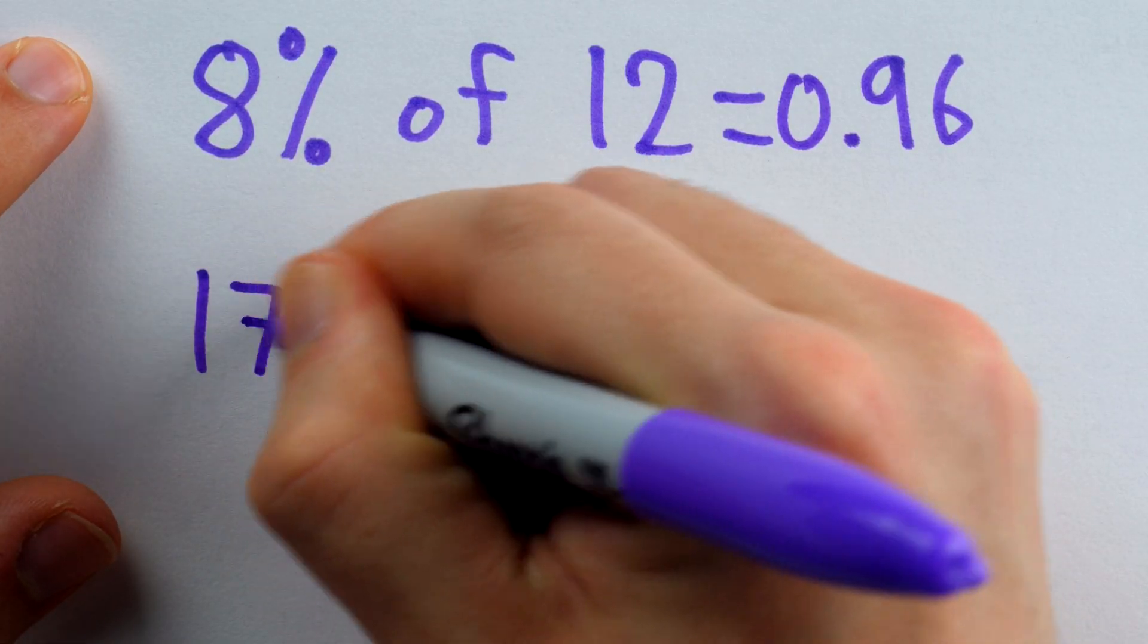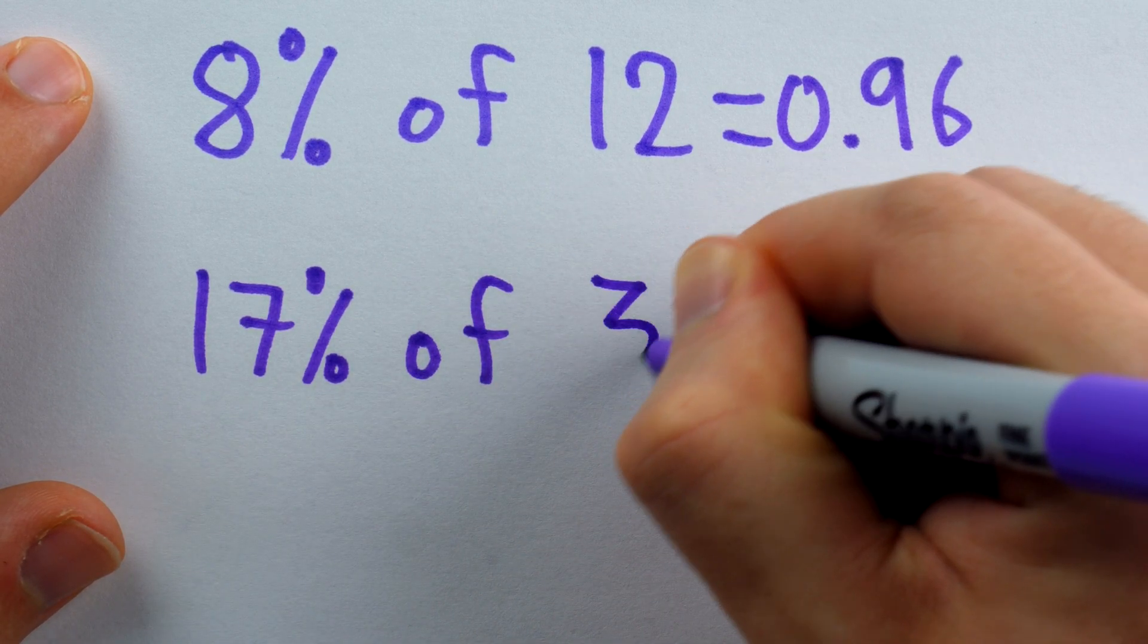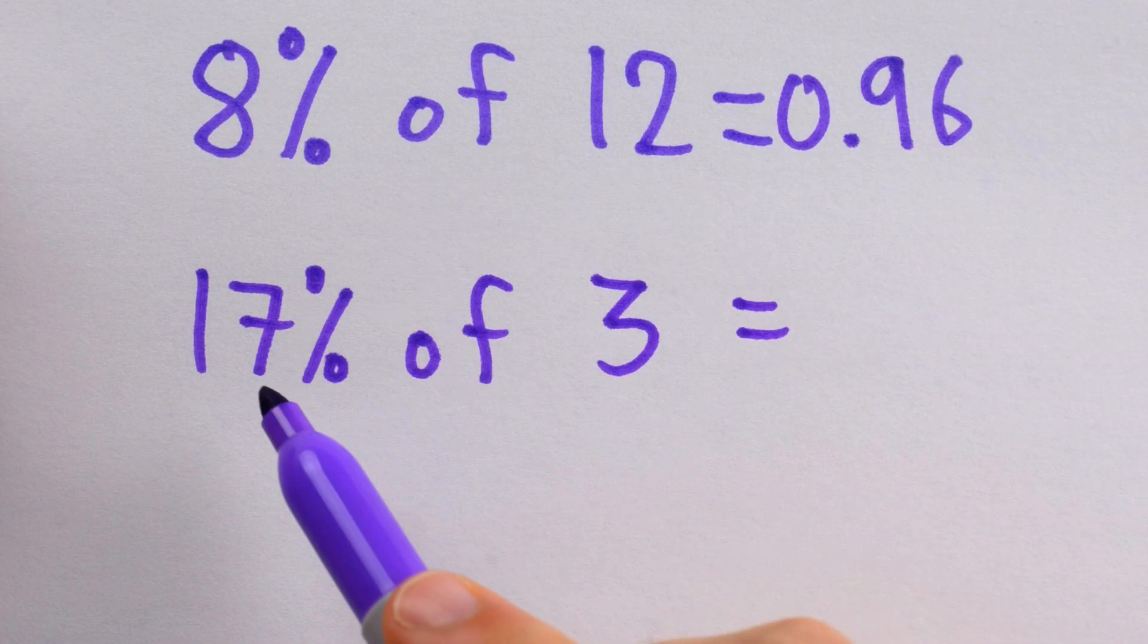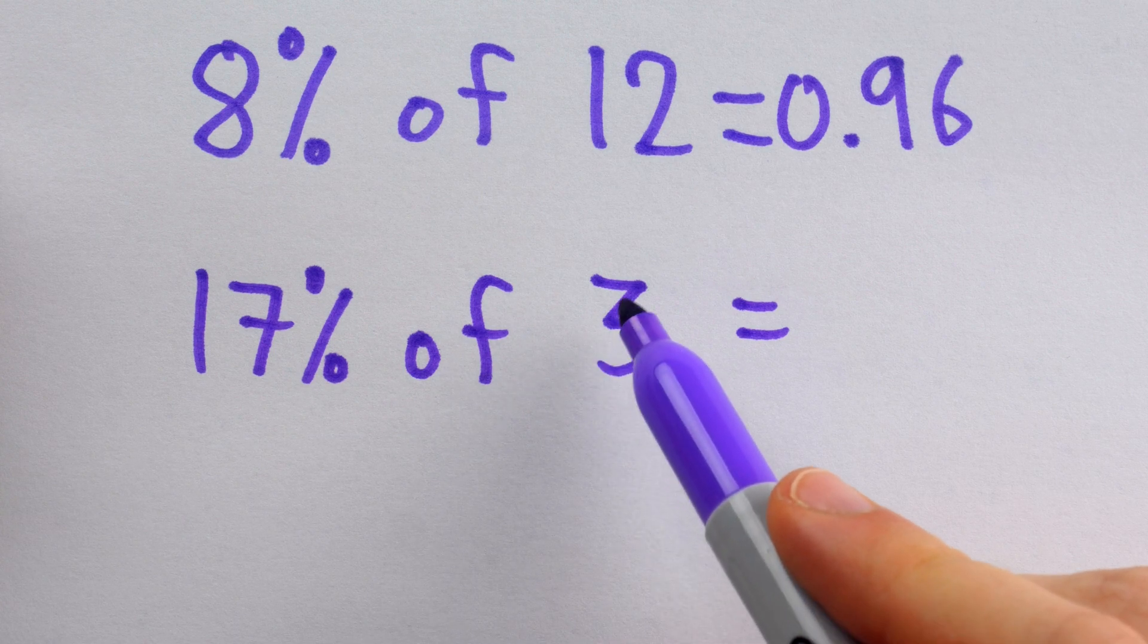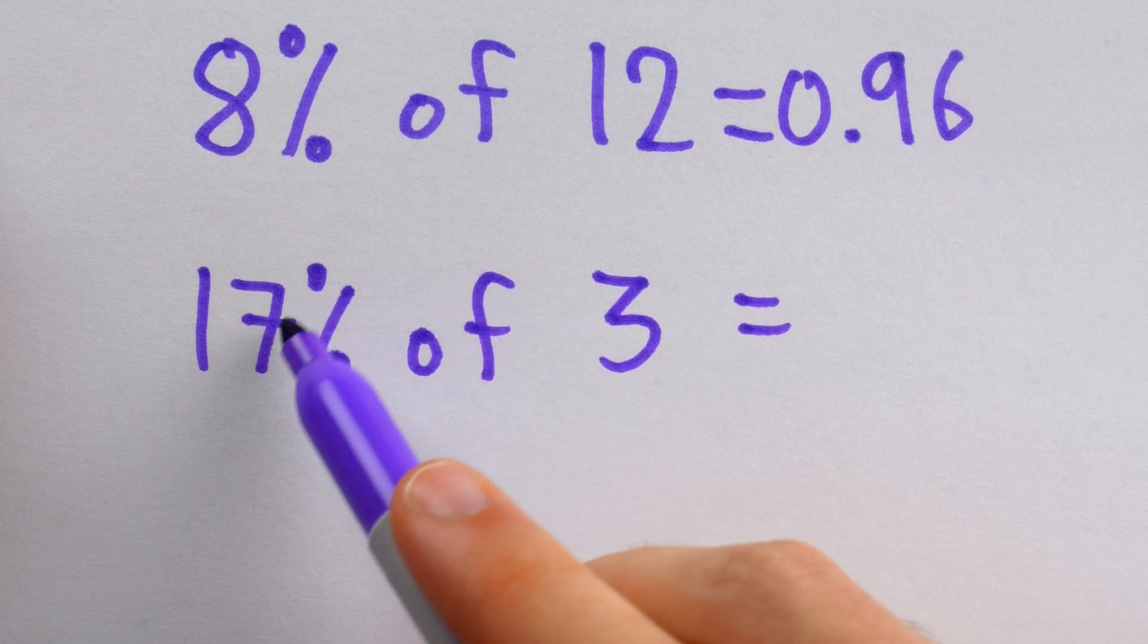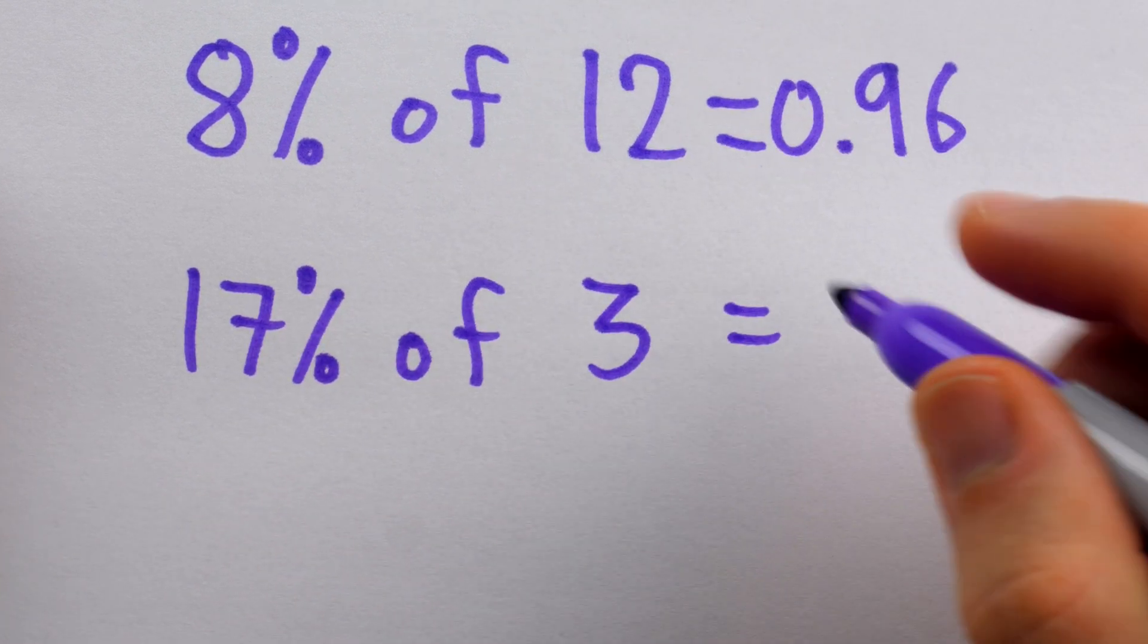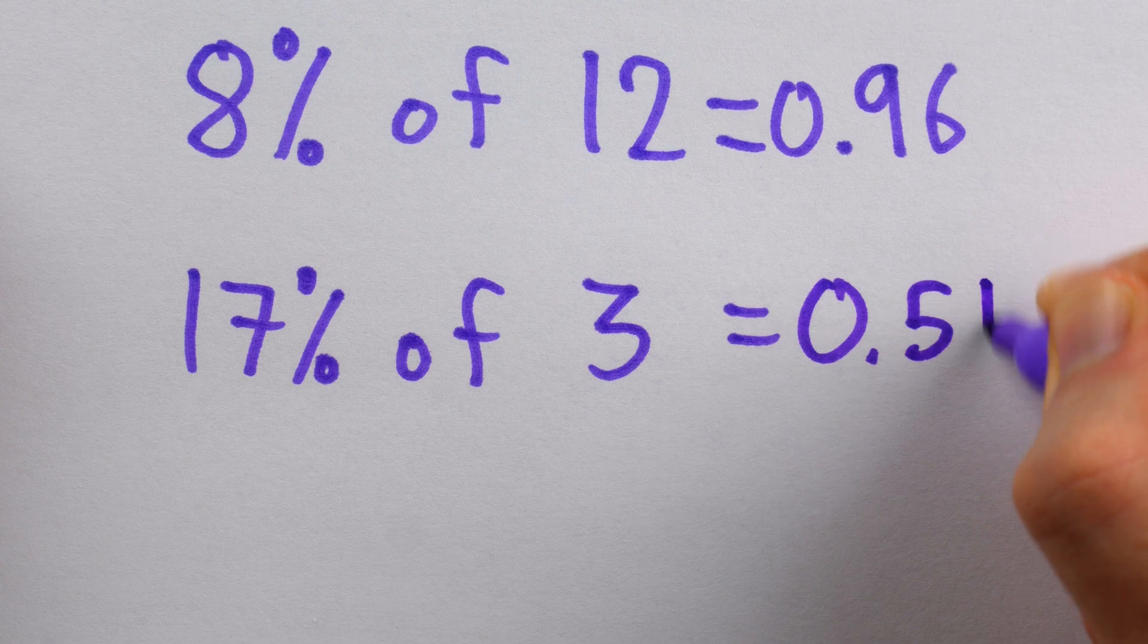Here's a fun one. What's 17% of 3? None of these percentages are obvious at a glance, but we're just doing multiplication. 17 times 3? Well, that's 3 times 10, which is 30, plus 3 times 7, that's 21, so add 30 and 21, that's 51, divide by 100, it's 0.51.